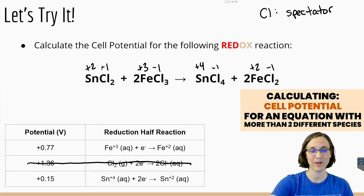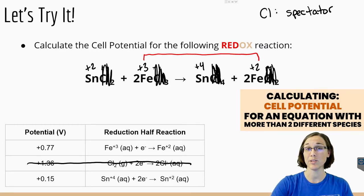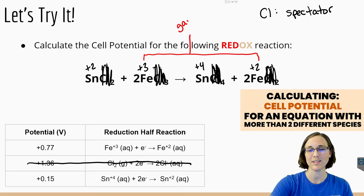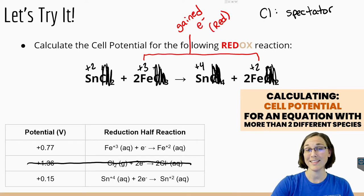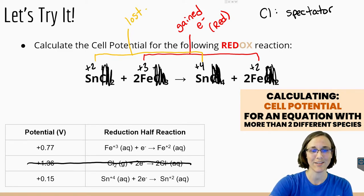We're going to forget that the chlorines even exist in this scenario. Now let's see how the chemicals have changed. From iron, we went from a plus three charge to a plus two charge — it became less positive, and the only way you can do that is by gaining electrons, meaning it was the reduction half. Whereas in the case of tin, it went from a plus two charge to a plus four charge — it became even more positive, meaning it must have lost electrons. Therefore, it's the oxidation half.